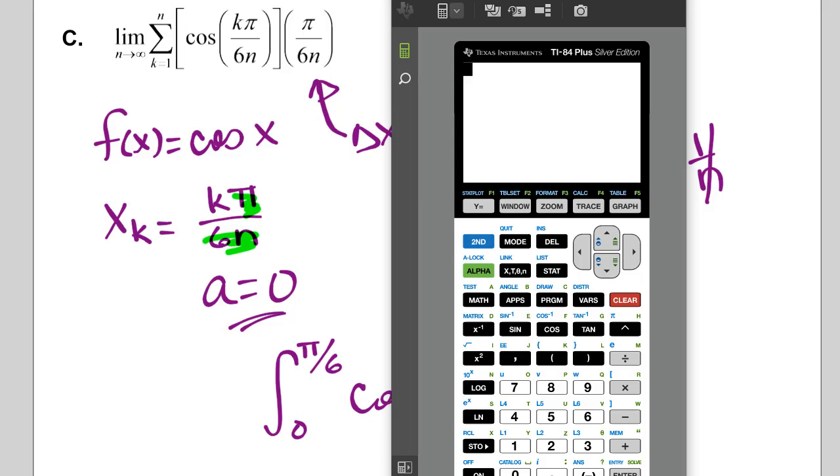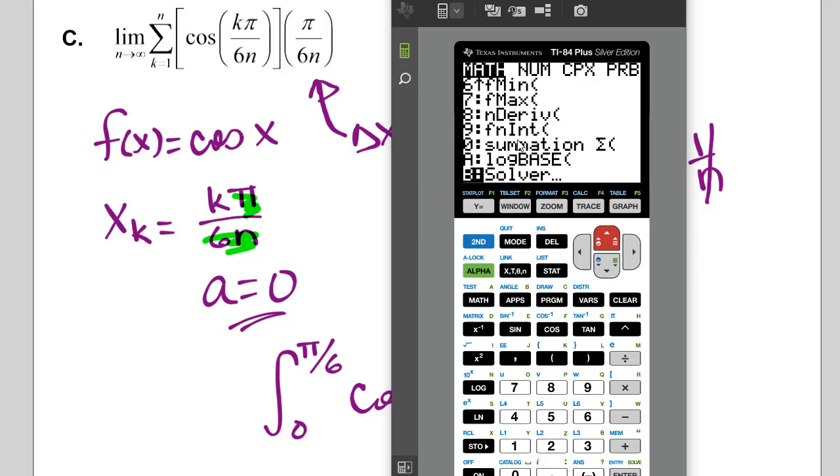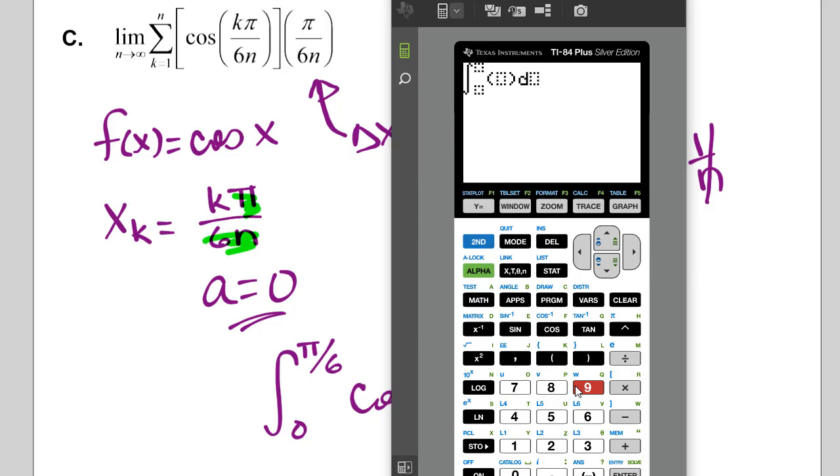So we'll do the integral first. So we're going to go to math, option, let's see the 9 or 0, integration is option 9. Okay. We're going from 0 to pi over 6, cosine x dx. All right. Make sure your calculator is in radian mode, but we get 1 half. All right.